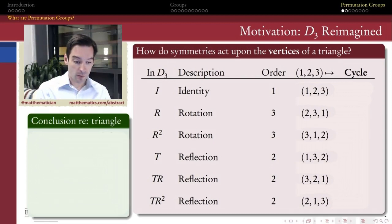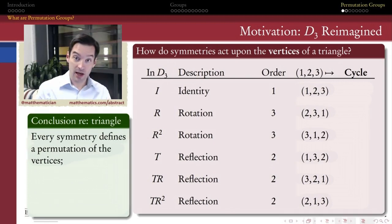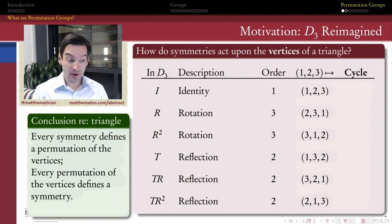And what we notice is that every possible way of permuting these three vertices one, two, and three is represented in this list. There are six different ways to permute a set of three elements. And so, since I've associated to each one of those different permutations a different symmetry of my triangle, the conclusion that I can come up with is that every symmetry defines a permutation of the vertices. But conversely, for a triangle, every permutation of the vertices defines a symmetry.